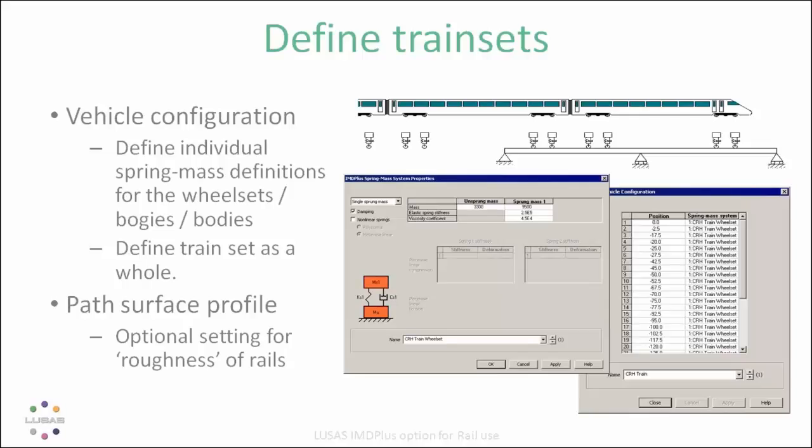Rail dynamics is important because trains are very heavy and some structures are very light, so they tend to behave dynamically. Highway structures have vehicles that are quite light compared to the heaviness of the structure, so dynamic effects are a particular problem specifically in rail structures.